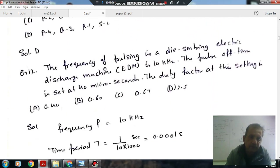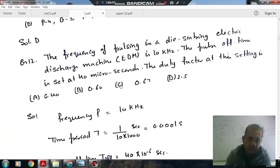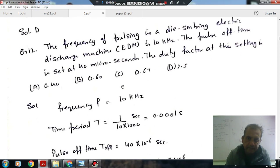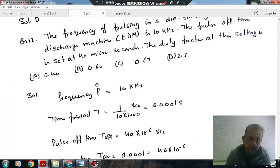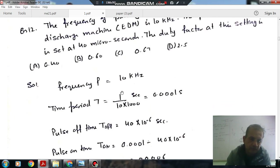Next, the frequency of pulsing in a die-sinking electric discharge machining EDM is 10 kHz. The pulse off time is set at 40 microseconds. The duty factor at this setting is: option A 0.4, B 0.6, C 0.67, D 2.5.